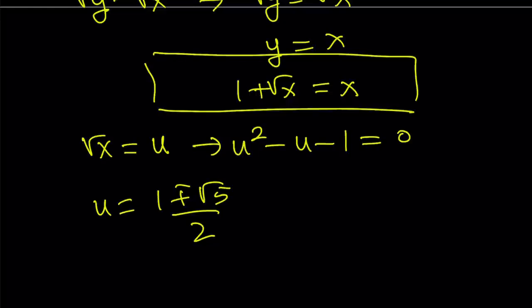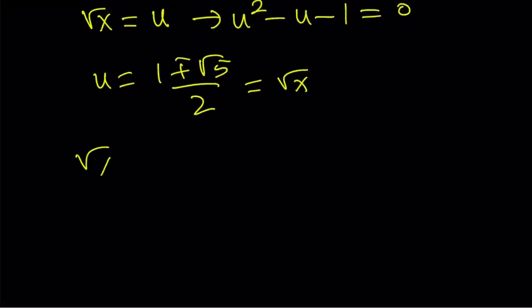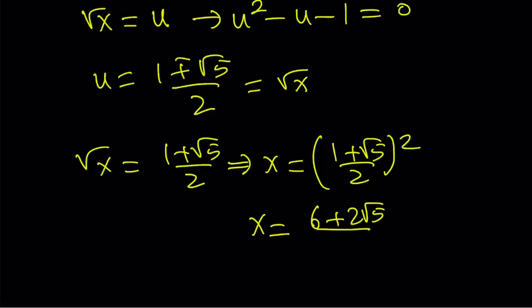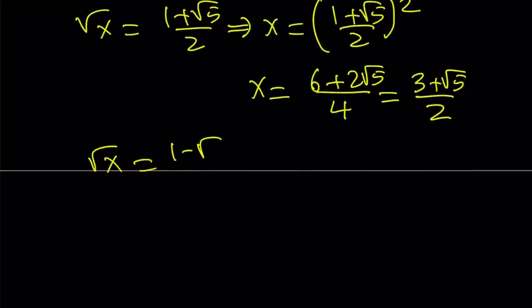But u is square root of x, therefore I can set it equal to square root of x. Since I'm trying to solve for x, I should square both sides. So if square root of x equals 1 plus root 5 over 2, then x becomes 1 plus root 5 over 2, all squared. Squaring that using a plus b squared gives 6 plus 2 root 5, divided by 4. Simplifying, we get 3 plus root 5 over 2 for the first x value. And if you set square root of x equal to 1 minus root 5 over 2, by similar calculation you get 3 minus root 5 over 2.